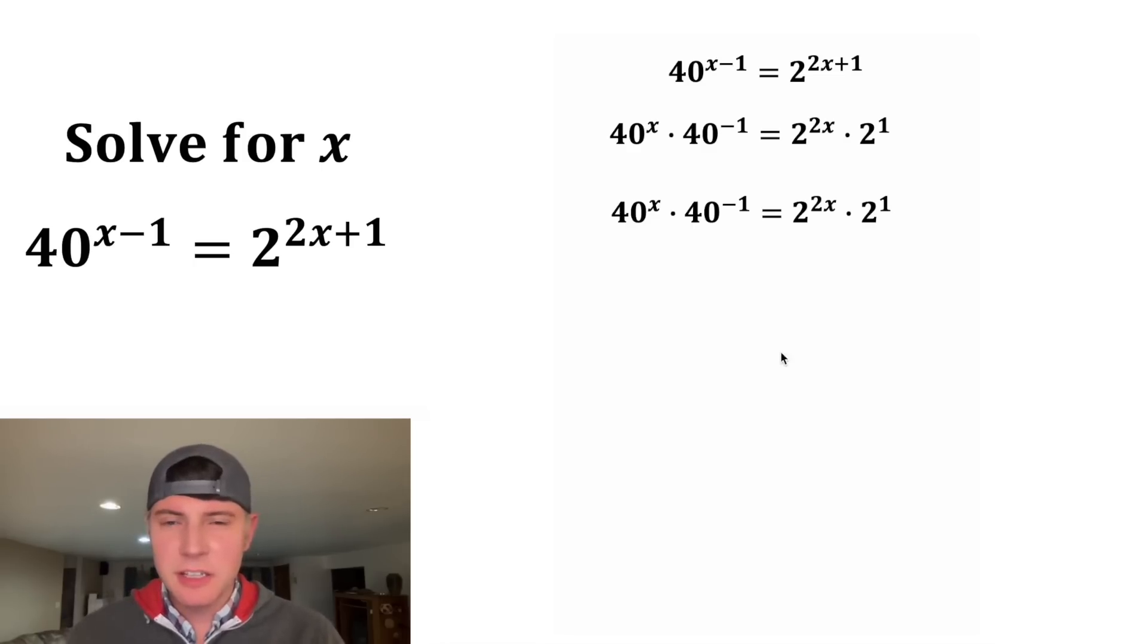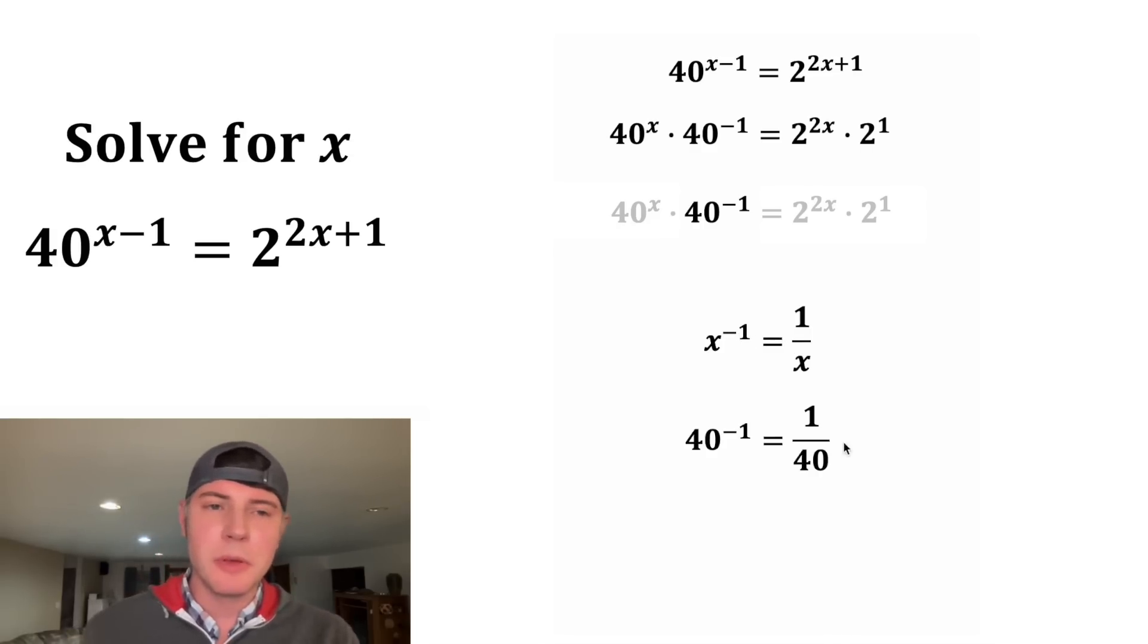Next, let's copy this down and let's look at this 40 to the negative one. The way a negative exponent works is something like x to the negative one is equal to one over x. So 40 to the negative one would be one over 40.